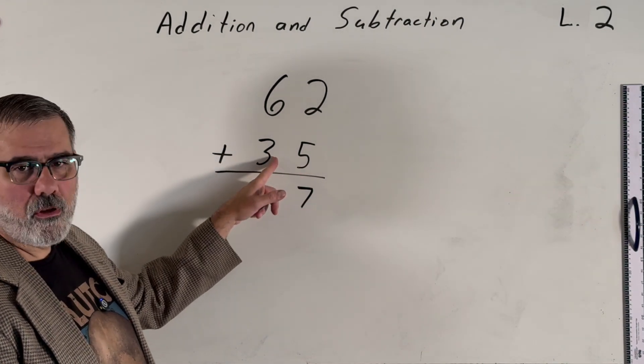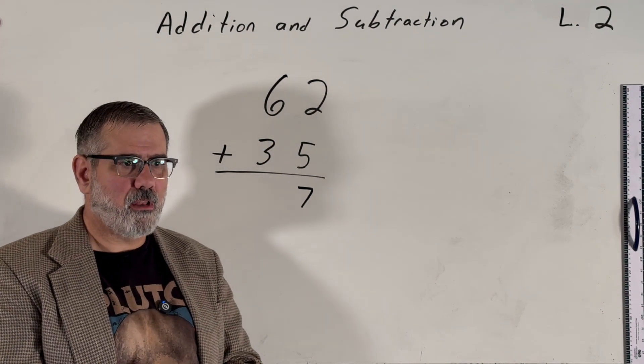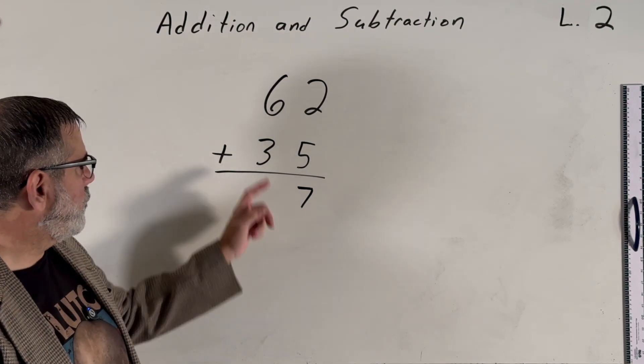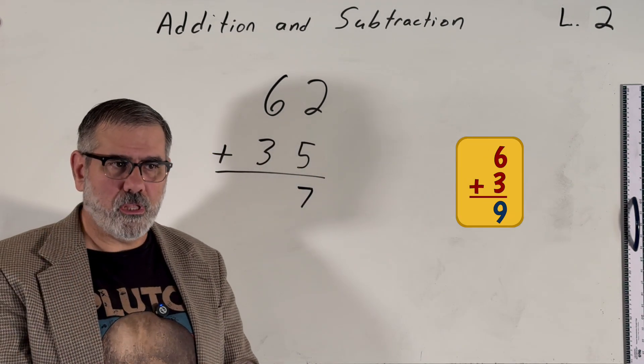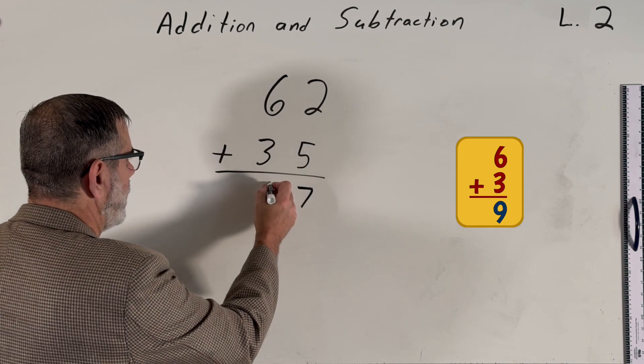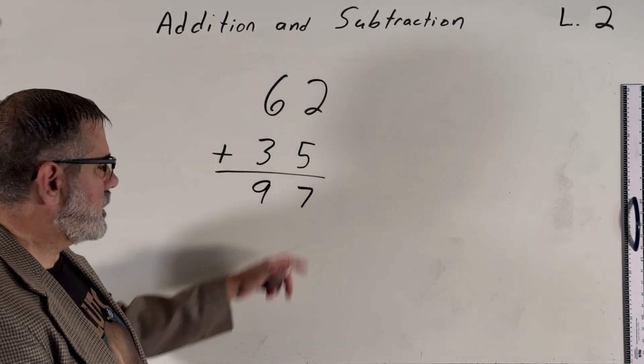Then we move on to the next column to the left, six plus three. Well, we might recognize it's skip counting by three. We can use the telephone sequence to go from six to nine, or we can use the multiplication fact six plus three equals nine to write down our answer, nine. And so 62 plus 35 is 97, and the answer is right down here.